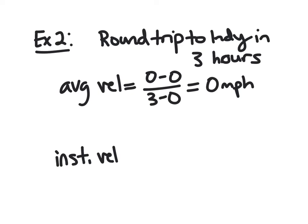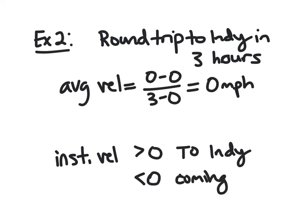But what about instantaneous velocity? Well, obviously, if we traveled 100 miles, we had to be going at a speed above zero for this whole time. But our velocity, well, as we leave and go to Indy, we're going to be increasing our position, right away from home. And so our velocity will be greater than zero or positive. And as we come back, our position is getting closer to home, it's decreasing. And so coming back home, our velocity, our instantaneous velocity will be negative.